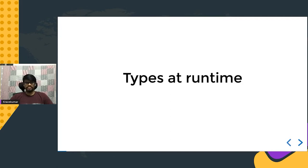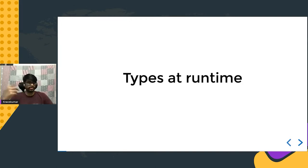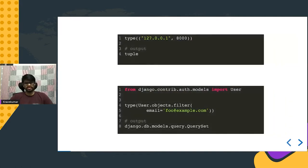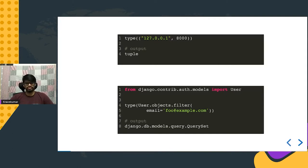Python is a dynamically typed language — you don't need to give any type information to the interpreter. It can figure out all type information about objects and their attributes at runtime. But there are some places where you need to know the types of an object. For that, there's a built-in function called `type()`. For example, passing a Django `User.objects.filter()` result to `type()` outputs `QuerySet`.